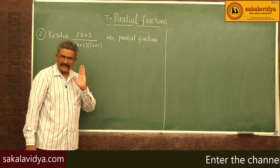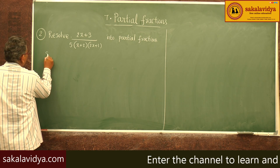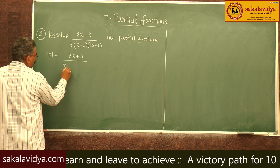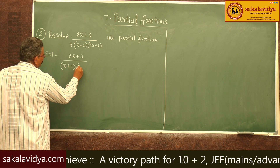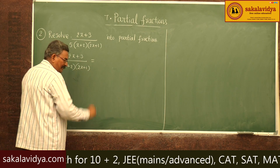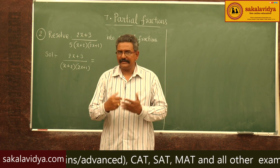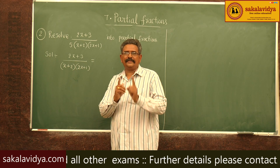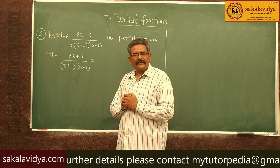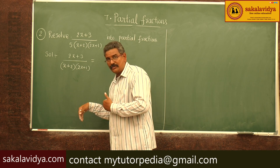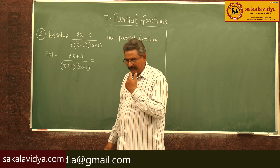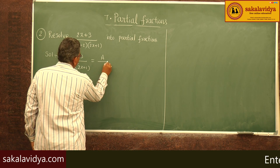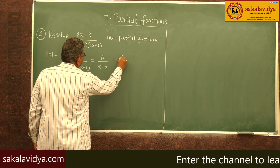So, first of all, let us consider (2x+3) divided by (x+2) into (2x+1). As we have two linear factors, for each linear factor there exists one partial fraction of the form A/(x+2) and B/(2x+1). So let us write A/(x+2) + B/(2x+1).